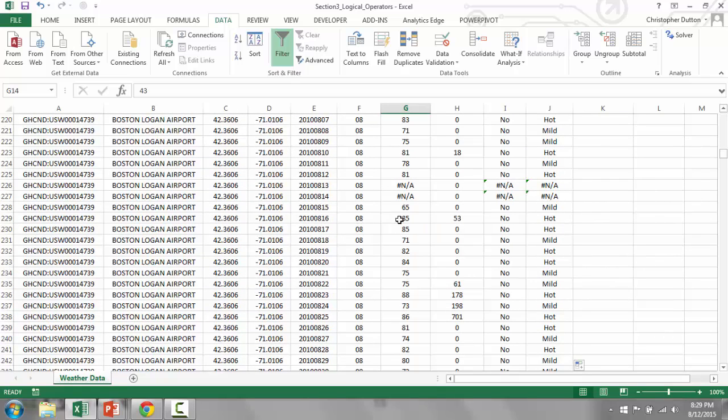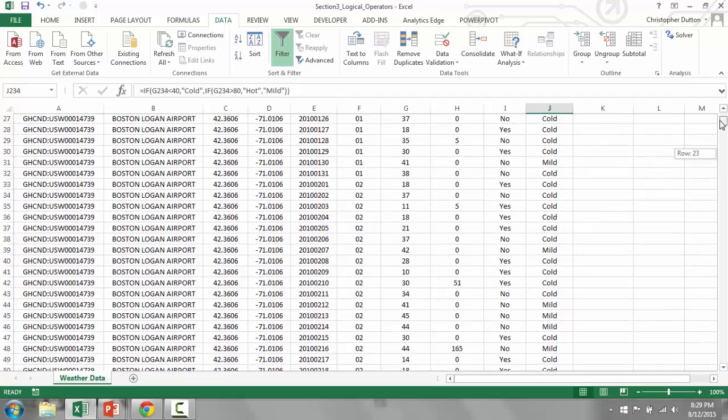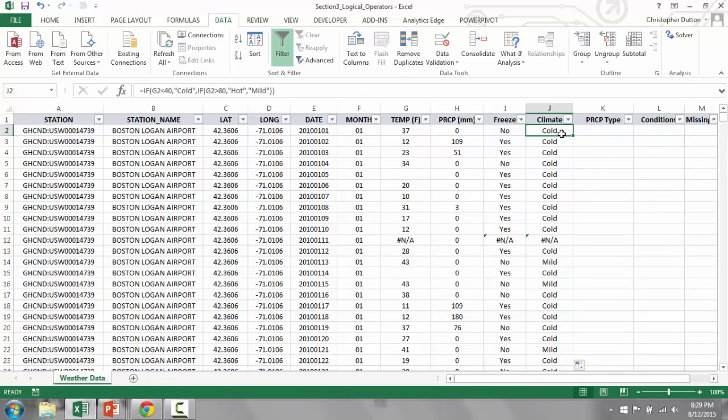So here's one in August, 85 degrees equals hot. 75 is mild. So it looks like it's working properly. There you go. Basic example of using a nested if statement to add a second criteria to my test.